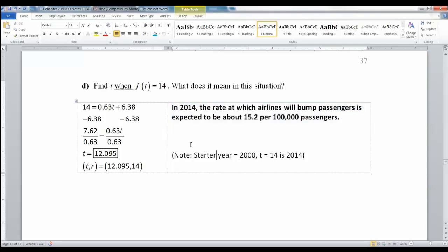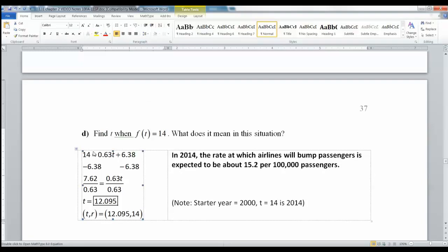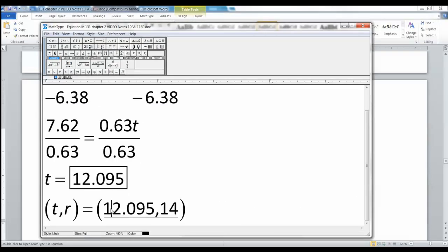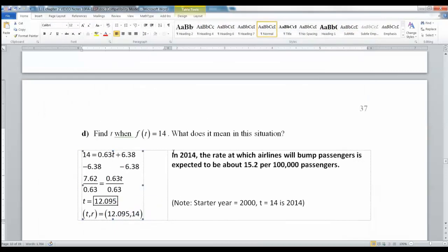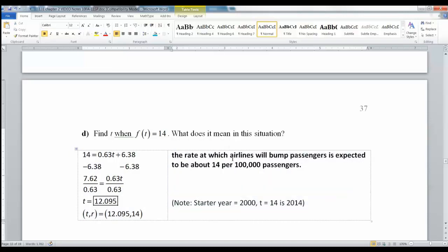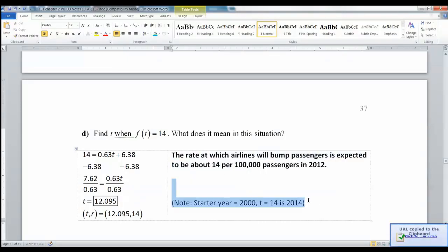Alright, we left off right here. This is not the correct interpretation, but we had found that r is equal to 14, so we put 14 in for r, we solved for t, and at the very end you found 12.095 for t. Now what does that mean? Well, in 2012, right, because if you round that you get about 12, the rate at which airlines bump passengers is expected to be about 14 per 100,000 passengers in 2012.